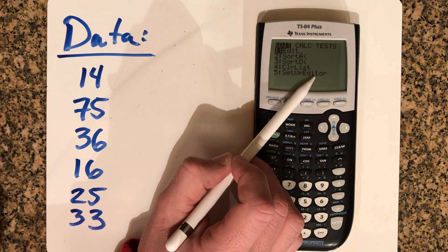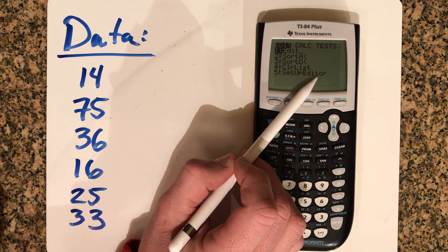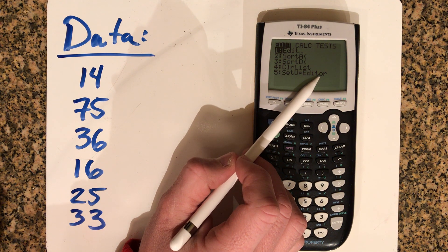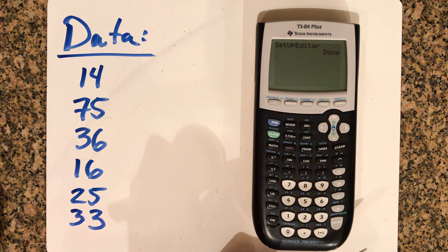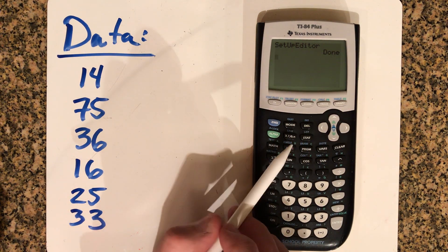We're going to use this little setup editor for the very first time here, just so we can get your calculator screen to look exactly like mine. So press option five, then press enter. It'll run a little program on the computer to get it so your screen is set up the same way as mine.